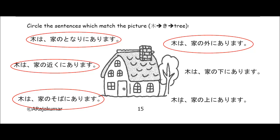Finally, ki wa, as for the tree, ie no ue — there's the ground, there's something coming up from the ground, that means above. Ie no ue, above the house. Ni — location particle, that means at above the house — arimasu, it exists. As for the tree, it exists at above the house. In other words, it is on top of the house, it is above the house. Ie etchigai masu — no, that's not correct. Make sure you've checked your answers.